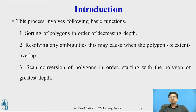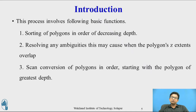This process involves three basic functions: first, sorting of polygons in the order of decreasing depth; second, resolving any ambiguity caused when polygons' z-extents overlap — we need to split those polygons into two different polygons; and third, scan conversion of polygons starting with the polygon of greatest depth.